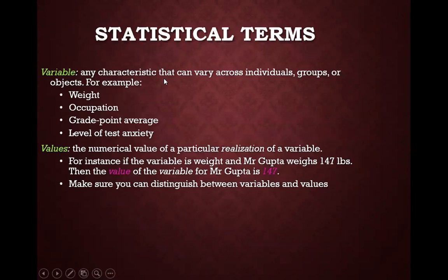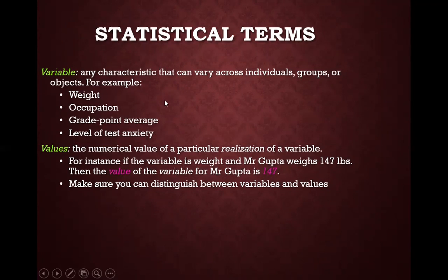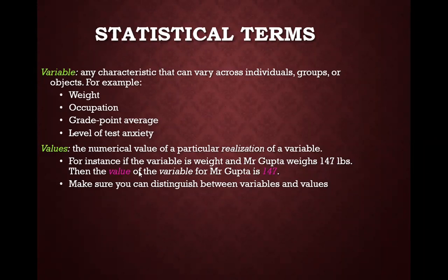A variable is any characteristic that can vary across individuals, groups, or objects. Examples include weight of individuals in a school class section and occupation. A value is the numerical value of a particular realization of the variable. For instance, if Mr. Gupta's weight is 147, then the value is 147 and the variable is weight. There is a difference between variable and value.